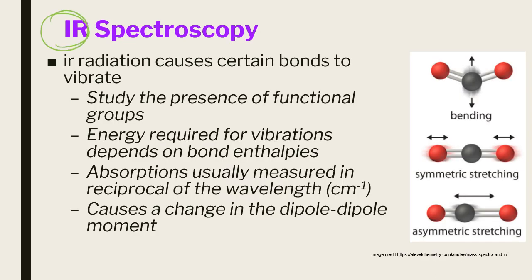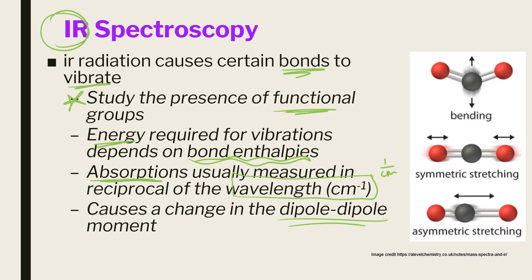Now we're going to look at IR spectroscopy. Infrared radiation is slightly less energetic than visible light. What's cool about infrared radiation is it causes certain bonds to vibrate in different ways, and we can detect those vibrations with computers. The vibrations differ across different functional groups, so IR spectroscopy allows us to figure out what functional groups are present in a compound. The energy required for these vibrations depends on bond enthalpies. The IR radiation is absorbed by bonds, leading to vibration, and we measure in reciprocal centimeters (cm⁻¹). It's all about changes in dipole moments.